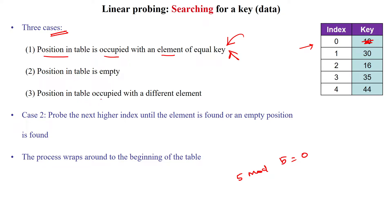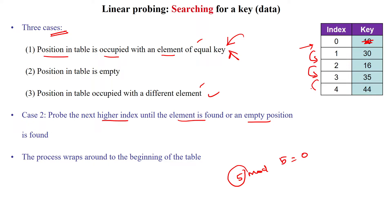Another possibility is the position in the table is occupied with a different element. So these two cases — position occupied by different element and position having equal key — are almost the same. Now, if the position in the table is not matching with the given element or key, we have to check the next higher index until the element is found or an empty position is found.